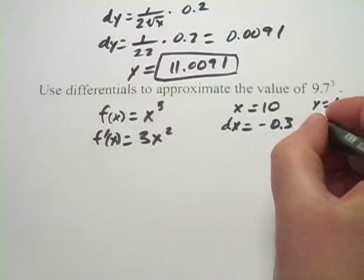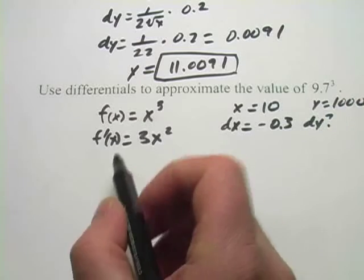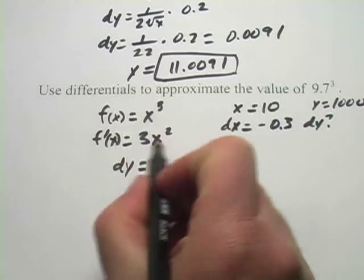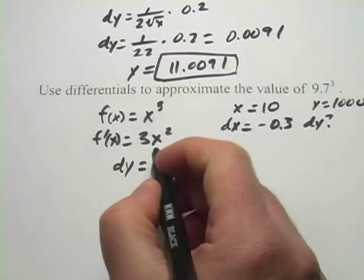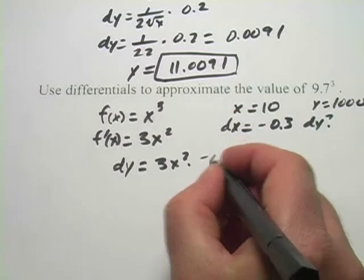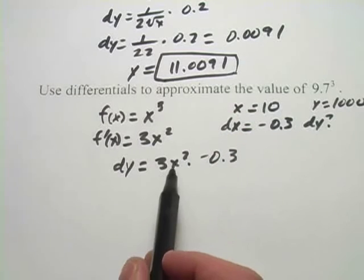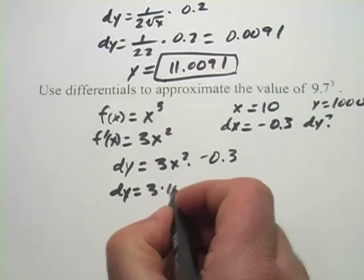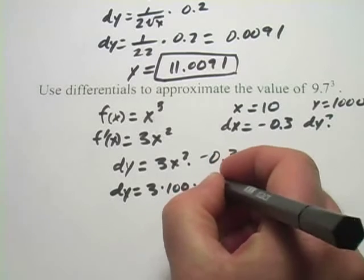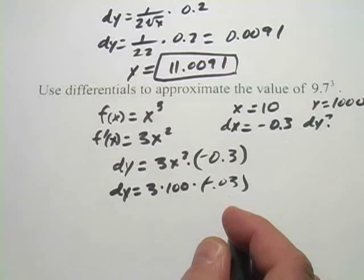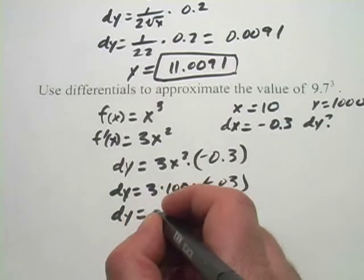So what's our dy? That's the question. Well, dy is the derivative of the function, so 3x squared, times the change in x, so times negative 0.3. And we've got to put our x value in here, x is 10, so this is 3 times 100, times negative 0.3. And that is going to be negative 90.